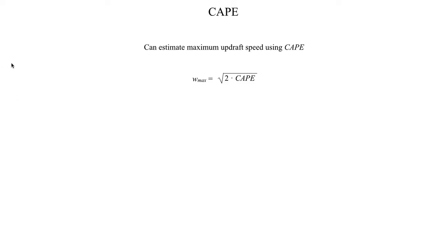Another property of CAPE is that you can estimate the maximum updraft speed using the CAPE value you've calculated. That calculation is simply the square root of 2 times the CAPE value, and the units you get back are meters per second. Higher values of CAPE typically give you stronger updrafts, but it's important to keep in mind the assumptions we made in deriving the buoyancy equation.